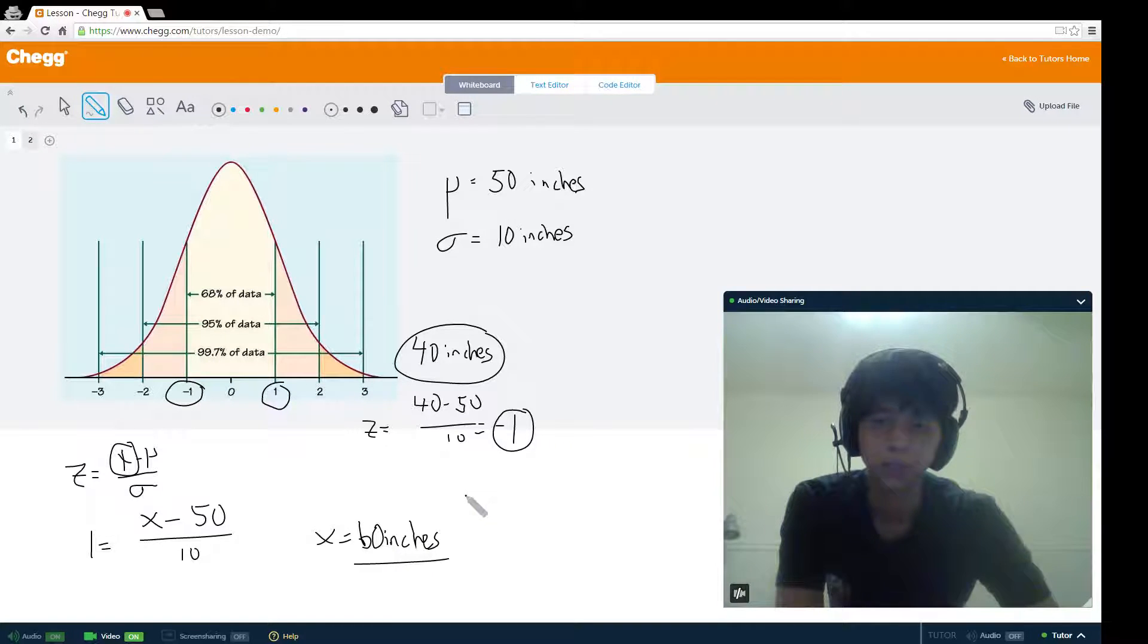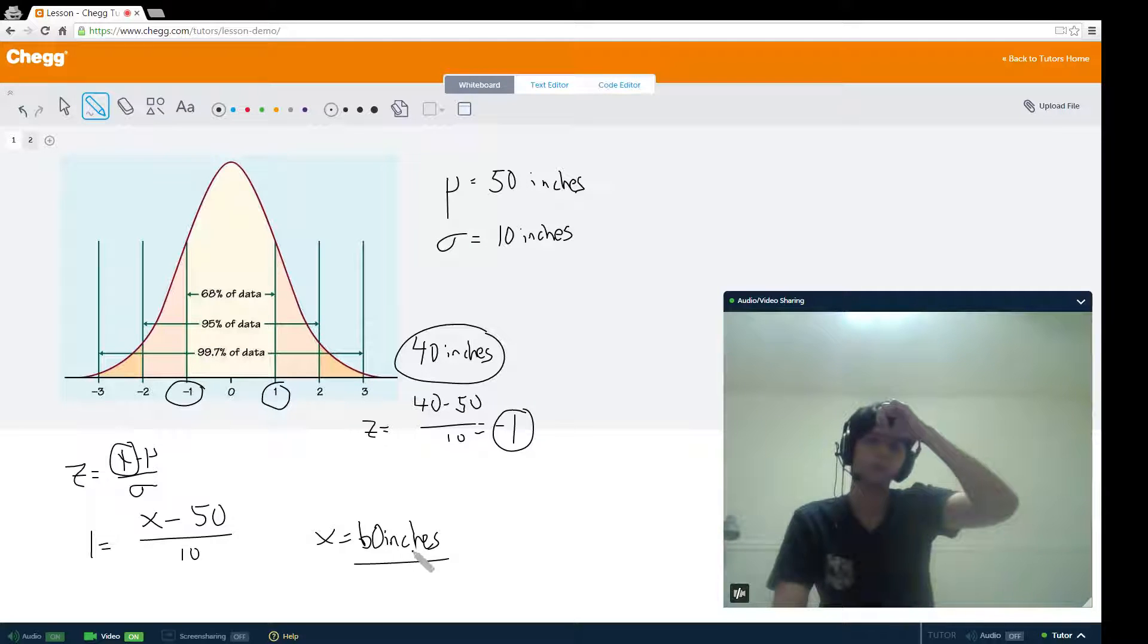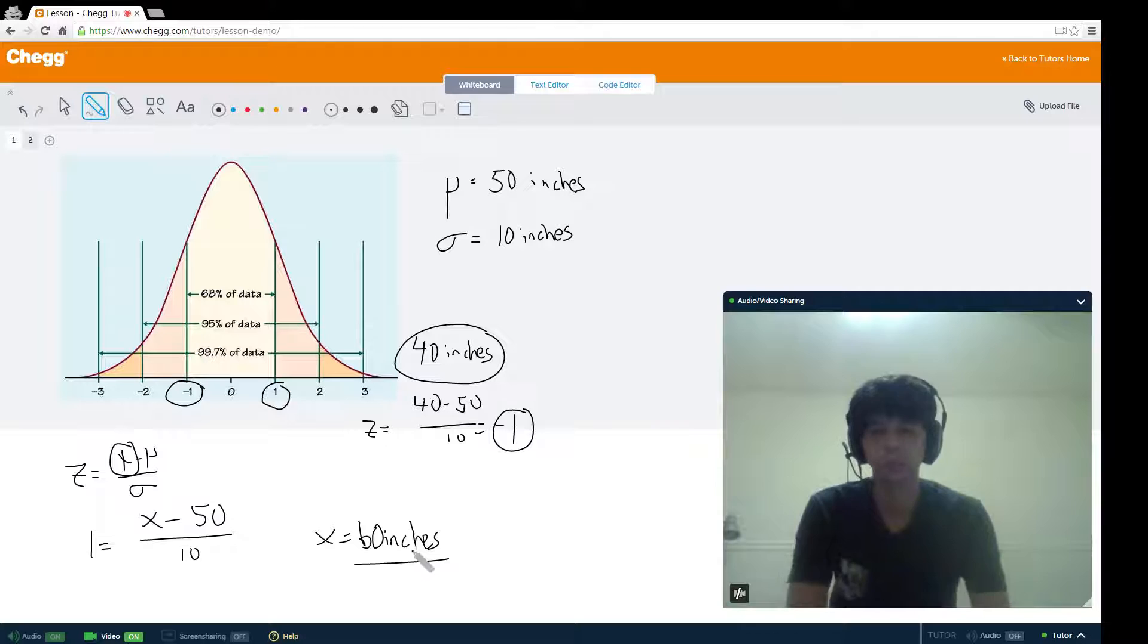Then you can tell me the middle 68% of the data lies between 40 inches and 60 inches, which have z-scores of negative 1 and 1 respectively. That's another way that you might be asked questions regarding z-scores and normal distributions.